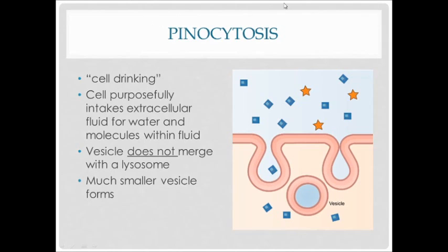In pinocytosis — this is cell drinking — the cell is taking in large amounts of extracellular fluid. They used to think it was specifically for water, but cells are actually trying to bring in molecules that are trapped in the water. In this case, a lysosome does not have to attach to the vesicle to break it down, and the vesicles tend to be a lot smaller than those in phagocytosis.